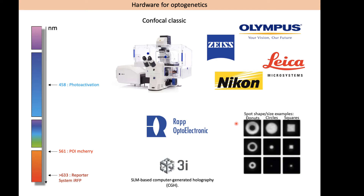To perform an optogenetic experiment, you don't need a very complicated device. You just need a UV laser — for example, a 458 or 488 nm laser — which is available on most confocals in our labs. So a basic experiment can be done with a classic confocal. For more complicated experiments with particular patterns of illumination or 3D experiments, there are companies that develop devices allowing more sophisticated optogenetic experimental designs.